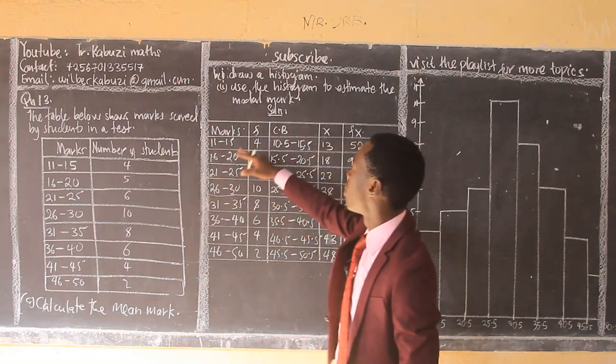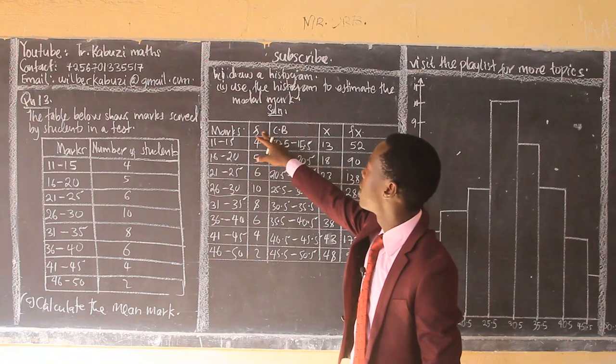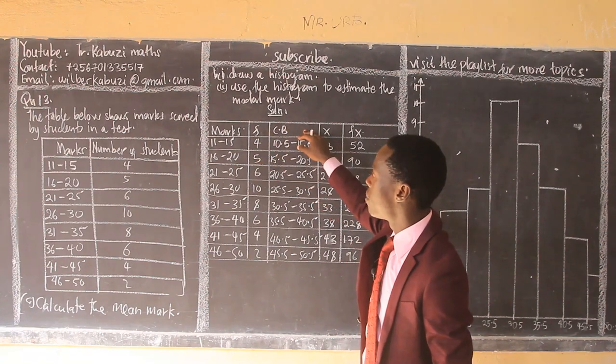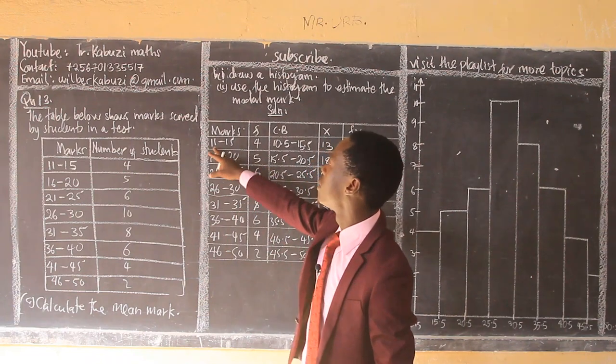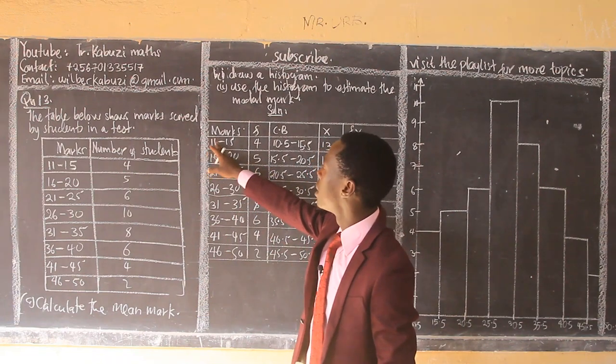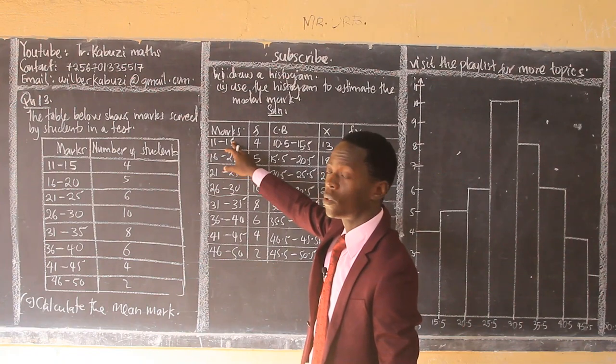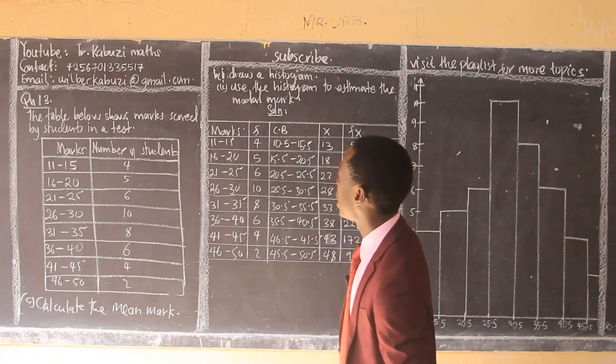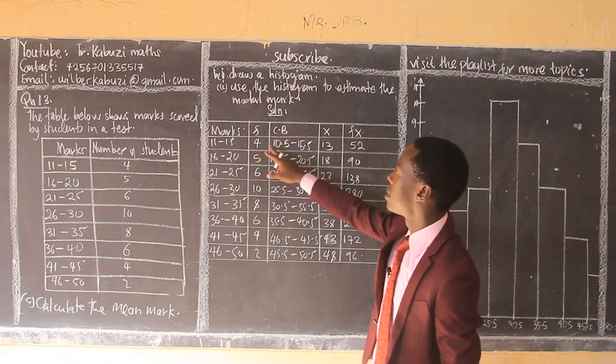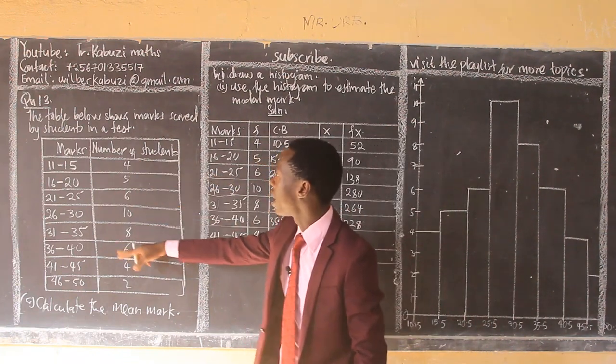The number of students will automatically qualify to be the frequency, then we will get the class boundary. Now, because we don't have decimal points, we subtract 0.5 from here, then we add 0.5 to the upper class. So the lower class we subtract, the upper class we add. So that's how I generate the class boundaries. This frequency is coming from here.